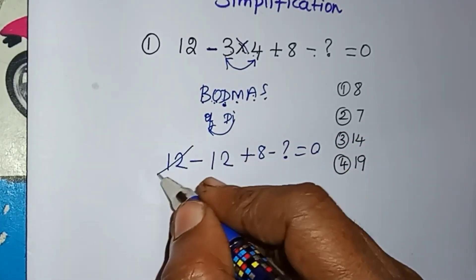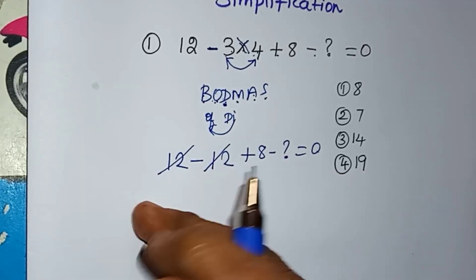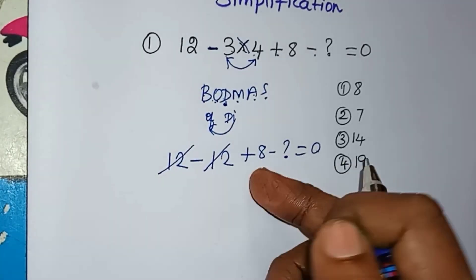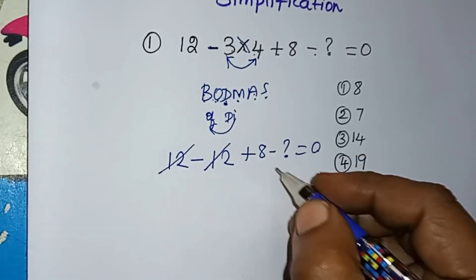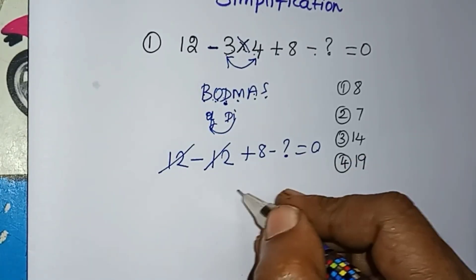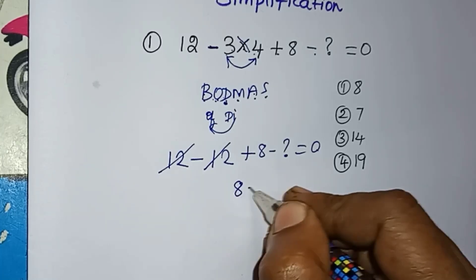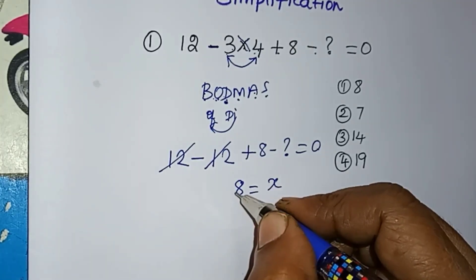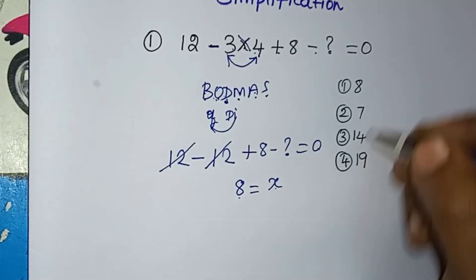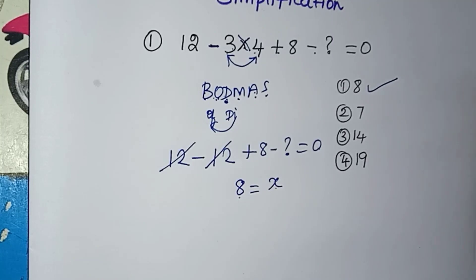So plus 2 minus 2 cancel. So plus 8 minus question mark — moving minus to the other side, so plus 8 is equal to x. So x is equal to 8.